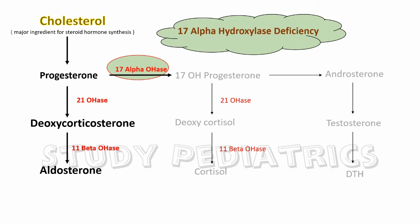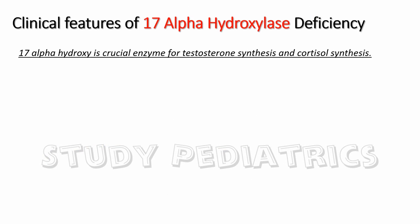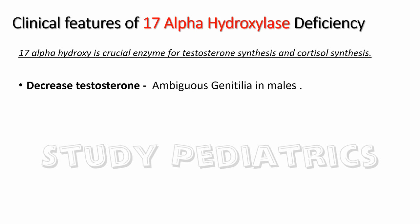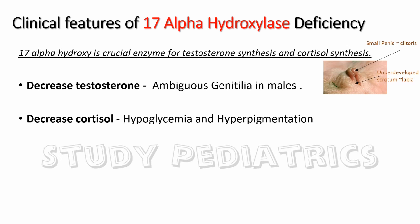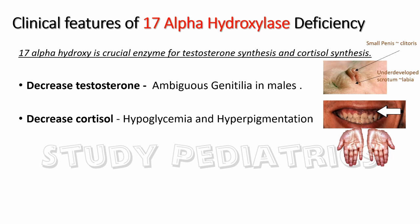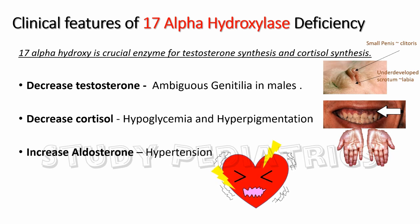Coming to the third cause: 17-alpha-hydroxylase deficiency. As we can see, 17-alpha-hydroxylase has a role in both cortisol and androgen production. Hence, there occurs a shift of the pathway toward aldosterone production. 17-alpha-hydroxylase is a crucial enzyme for testosterone and cortisol synthesis. Hence, decreased testosterone causes ambiguous genitalia in males, decreased cortisol causes hypoglycemia, and there occurs overproduction of MSH due to the common pathway between ACTH and MSH synthesis, resulting in hyperpigmentation. Increased aldosterone causes sodium-water retention, leading to hypertension.